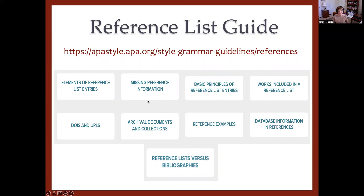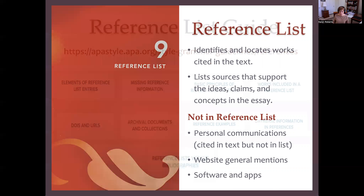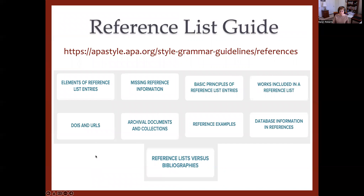We have a rich resource for your creation of your reference list and your citations. You'll find elements of reference, missing reference information, basic principles, works included in a reference list, and DOIs — digital object information — which tell you where you can go to find the article or source. And URLs, you're familiar with that. All of these examples, especially this button here, will help you format your references.